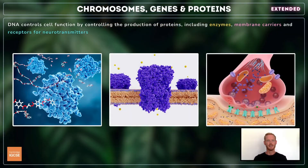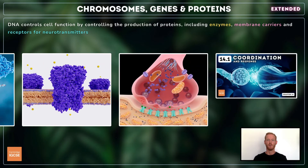Some of the proteins coded for by DNA include enzymes, which catalyse chemical reactions; membrane carriers that control which substances can enter or leave the cell; and receptors for neurotransmitters, which allow information in the form of electrical impulses to be transmitted from neuron to neuron. See topic 14.1 for more information.